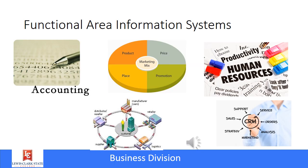In larger organizations, business activities will be separated into different functional areas, but even in small businesses there are different functions that the business has to perform. Information systems that support a specific functional area are called functional area applications. Some examples, as you see on this slide, might include accounting, marketing, human resources, operations management, and CRM, which is customer relationship management.